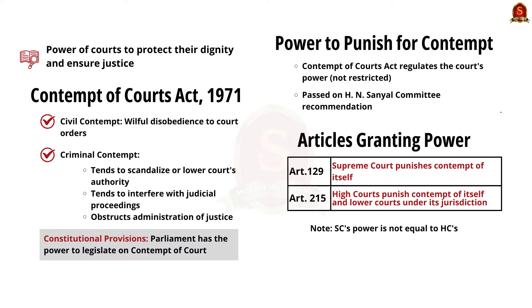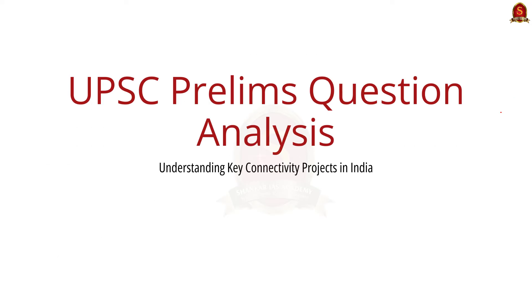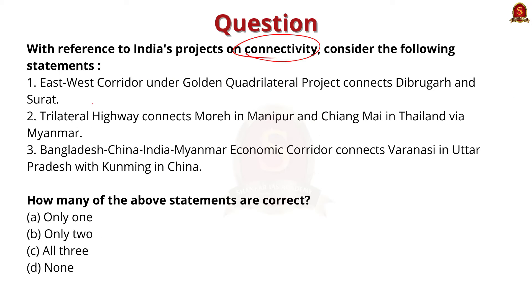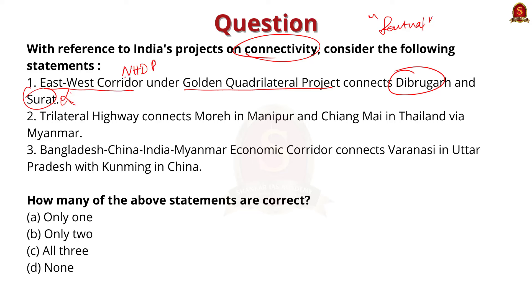Next question: with reference to India's projects on connectivity, consider the following statements. It's a straightforward and more factual question. The first statement says the East-West Corridor under the Golden Quadrilateral project connects Dibrugarh and Surat — this is incorrect. The East-West Corridor is part of the National Highway Development Project (NHDP), which aims to connect Silcher in Assam to Porbandar in Gujarat. It is a 3,300 km corridor passing via National Highway 27.